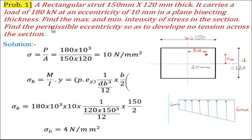Now we will take one problem on this formula. A rectangular strut of 150 mm by 120 mm thick carries a load of 180 kN at an eccentricity of 10 mm in a plane bisecting the thickness. Find the maximum and minimum intensity of stress in the section. Also find the permissible eccentricity so as to develop no tension across the section. This is a problem of eccentricity about both axes — the xx axis as well as the yy axis.